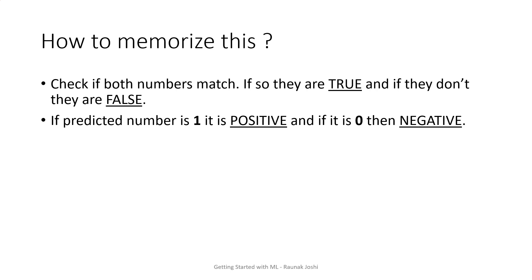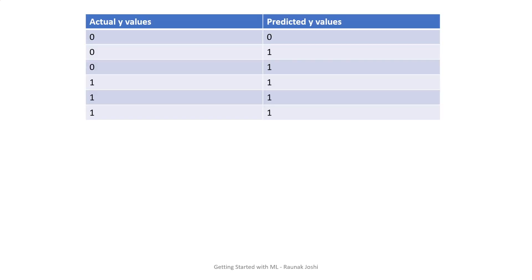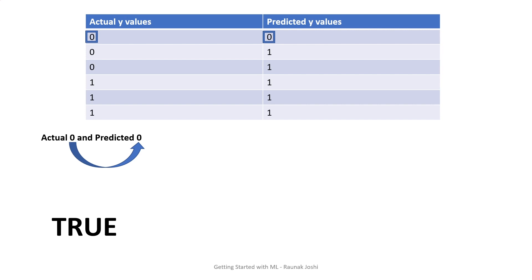Let's consider the first two values where we have 0 in both places. Actual is 0, predicted is 0. Both are 0s, so they match — it is true. If they wouldn't have matched, like one being 1 and the other 0, I would have said it was false. Now the second thumb rule: check the predicted value — it is 0, so it is negative. If it would have been 1 in the predicted value, it would have been positive.